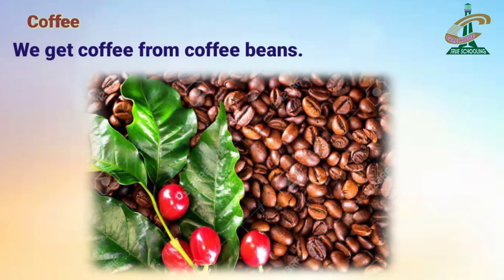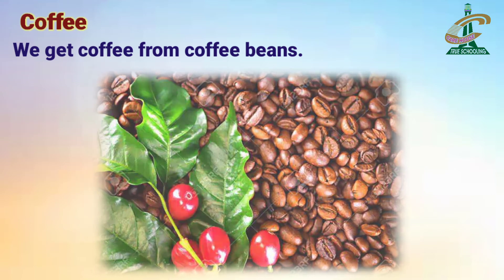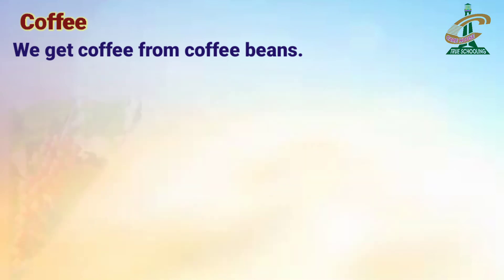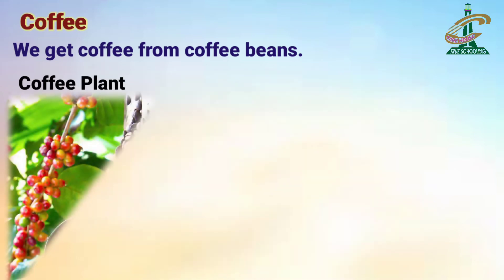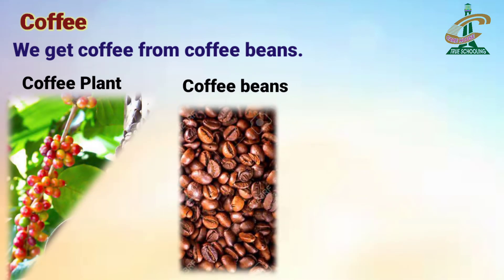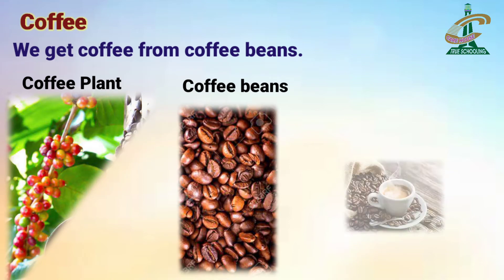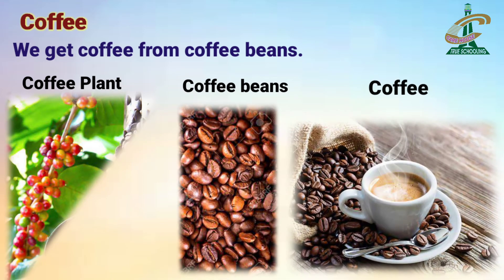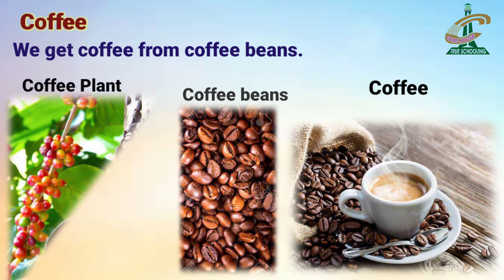We get coffee from coffee beans. Coffee plant سے ہمیں coffee beans ملتے ہیں جنکو dry کیا جاتا ہے. Then اسکو grind کرکے coffee powder بنایا جاتا ہے. Coffee powder سے ہماری coffee بنتی ہے.